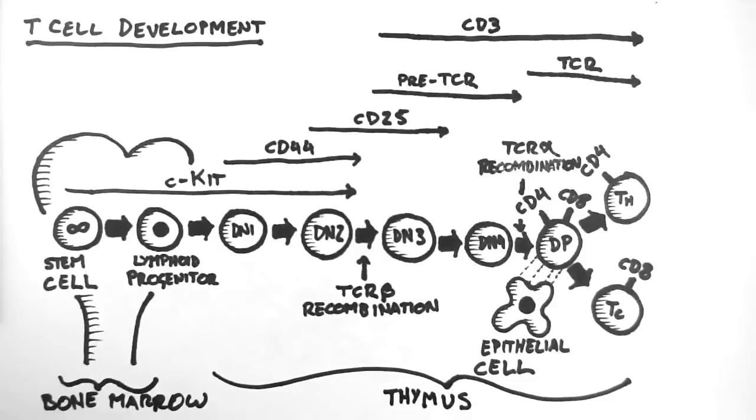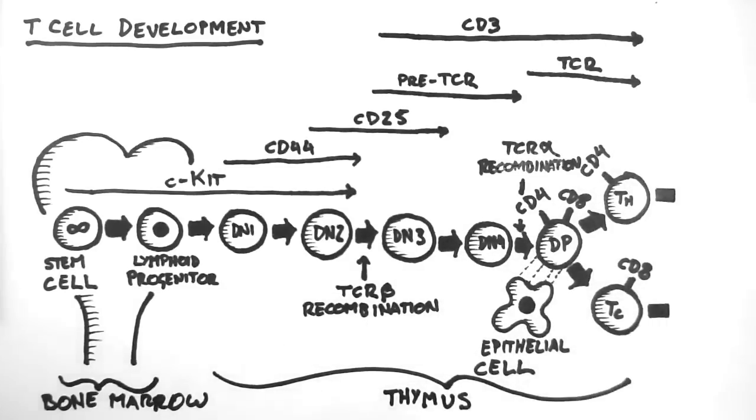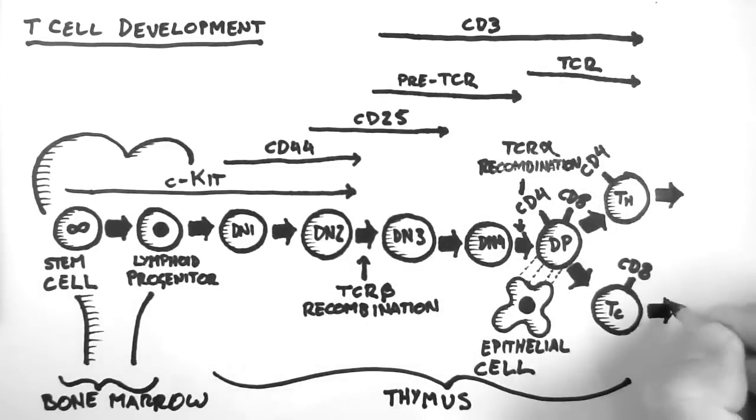This shouldn't be confused with the thyroid, which is an unrelated organ located a little higher in the neck. In fact, T cells are named after the thymus. That is where the T comes from. The rest of their development occurs in the thymus.